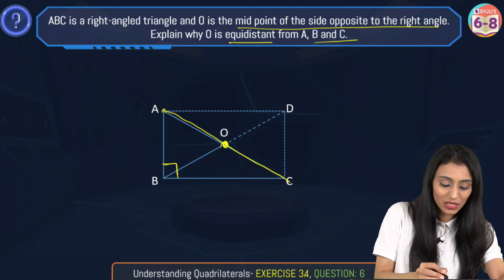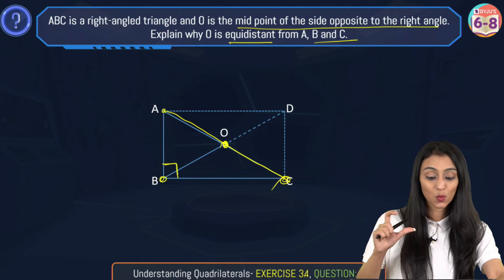Now explain why O is equidistant from A, B, and C—from all these points, why it is at equal distances.